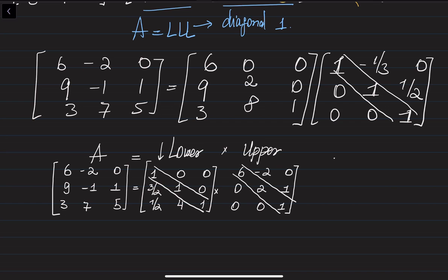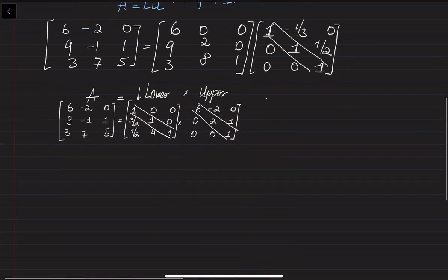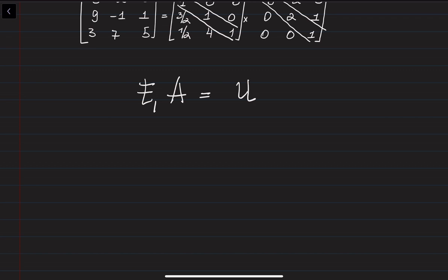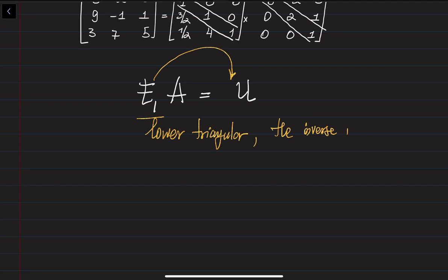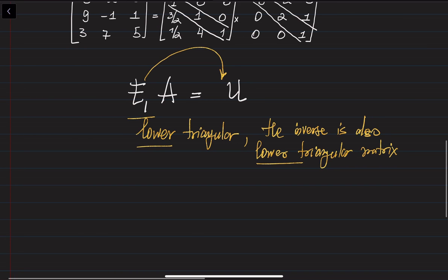Another modification of the LU decomposition is the PLU decomposition. This problem arises from the structure of the matrices. If you remember, what we did before is we had the matrix A, and we multiplied it by an elementary matrix to get the U matrix. The elimination matrix E is always a lower triangular matrix, and its inverse is also a lower triangular matrix.